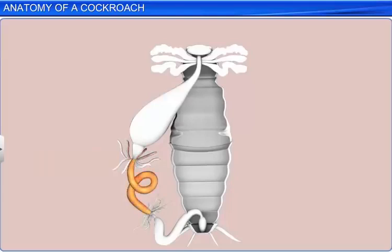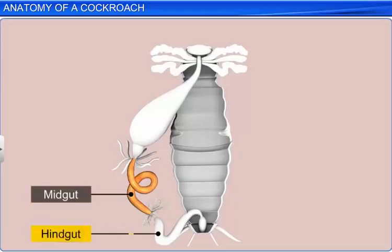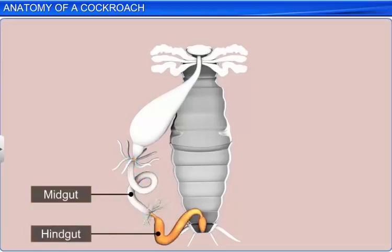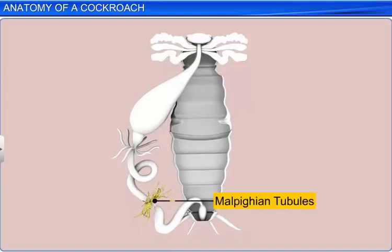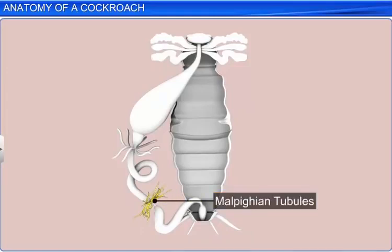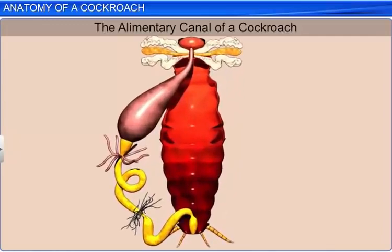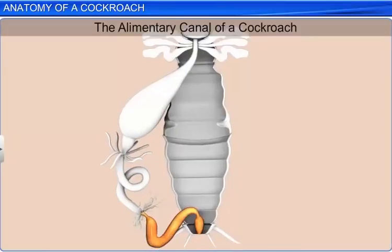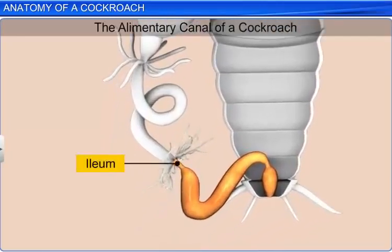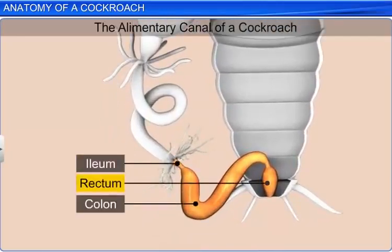At the junction of the midgut and hindgut is a ring of numerous filamentous yellow-colored malpigian tubules which function as excretory organs. The midgut is followed by the hindgut which is broader and is divided into ileum, colon, and rectum. The rectum opens to the exterior through a small aperture called the anus.